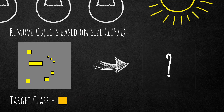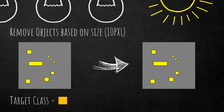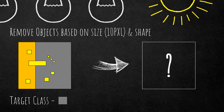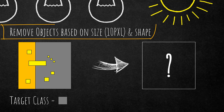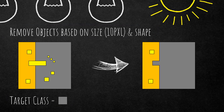A few more examples: if we remove image objects based on size — 10 pixels — targeting the orange class, nothing happens because the yellow image objects are not touching the orange class and cannot be dissolved into it. In a final example, removing by size 10 pixels and shape with the gray class as target, two yellow image objects on the left cannot be removed because the target class is only the gray class and not the orange class.